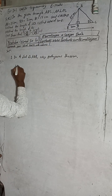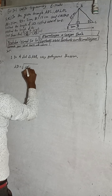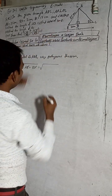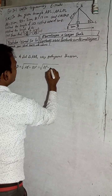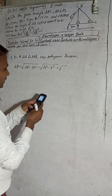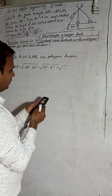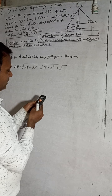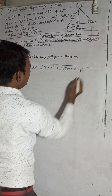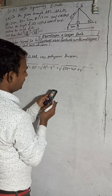Using the Pythagorean theorem: AD = √(AB² - BD²). So AD = √(AB² - BD²). AB = 25, so AB² = 625. BD = 7, so BD² = 49. Then 625 minus 49 equals 576.